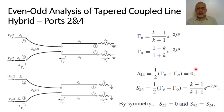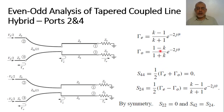The signal at port 2 due to excitation from port 4 is obtained as half the difference of even and odd reflection coefficients: S₂₄ = ½(γ_E − γ_odd). Taking this difference gives [(K−1)/(K+1)] · e^(−j2θ). So we have obtained S₄₄ = 0 and S₂₄ = [(K−1)/(K+1)] · e^(−j2θ).